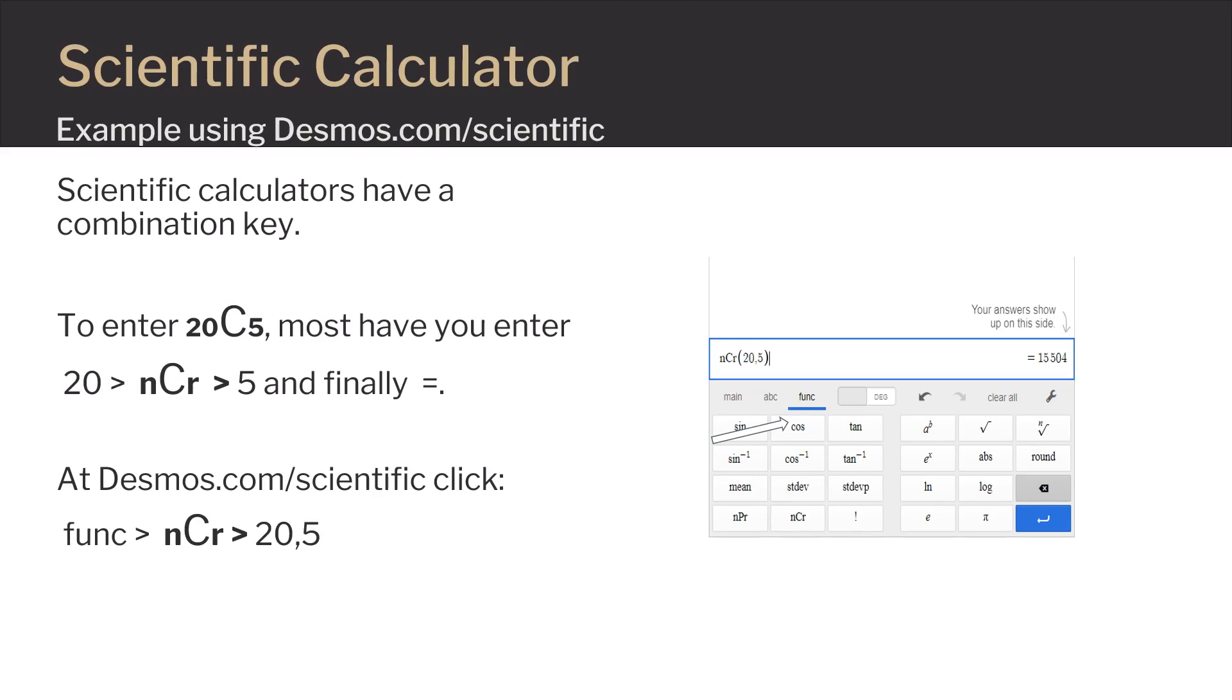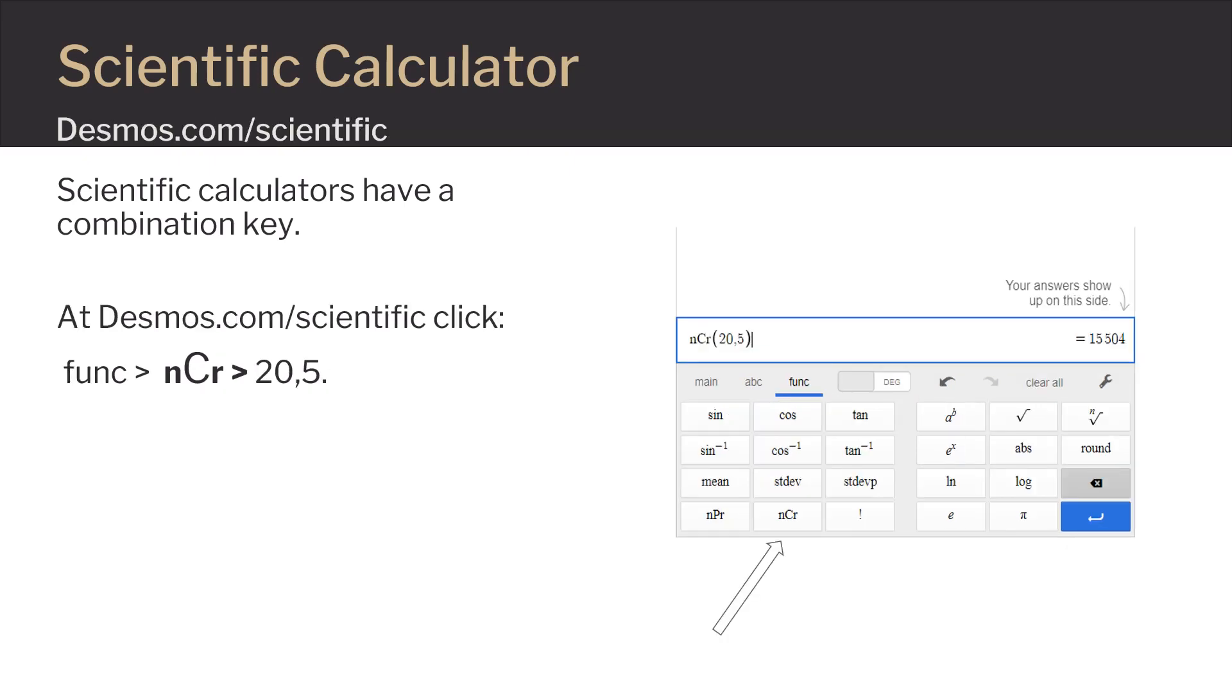So let's talk about how to make things easier by using a calculator. Most scientific calculators have a combination key. Usually you would enter the value for n first then hit the nCr key and then put in the r value and finally hit the equal key. The calculator I have here is from desmos.com. You click function then click on the nCr key and it comes up with parentheses. You just have to enter 20 comma 5 and your answer is listed off to the right.